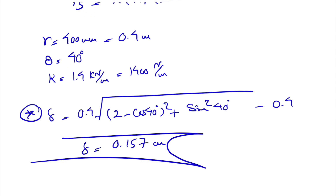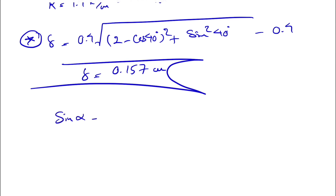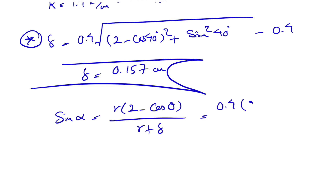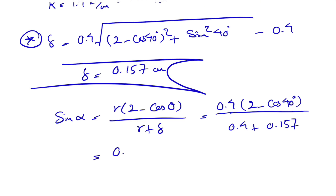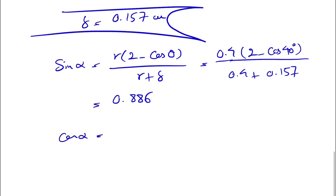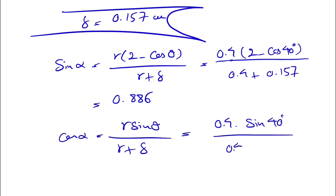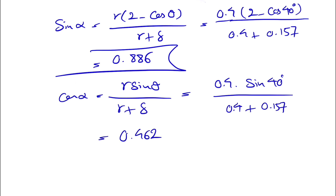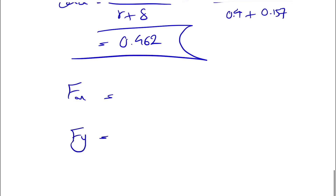Once we have delta, we find the sine and cosine of alpha. sin(α) = r(2 − cos(θ)) / (r + δ) = 0.4 × (2 − cos(40°)) / (0.4 + 0.157) = 0.886. cos(α) = r·sin(θ) / (r + δ) = 0.4 × sin(40°) / (0.4 + 0.157) = 0.462.